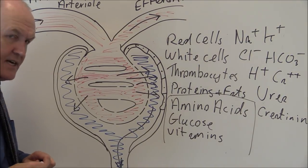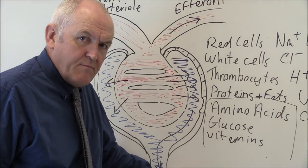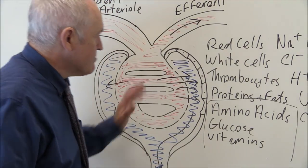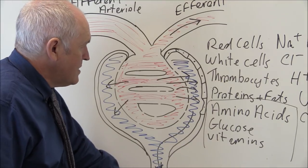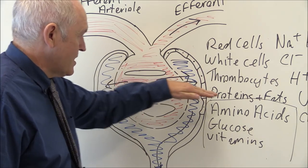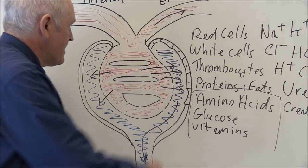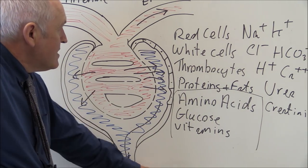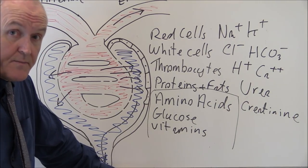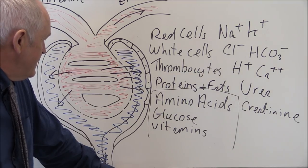So what we see is a physical sieving of the blood based on molecular size: larger molecules are retained in the capillaries, smaller molecules are filtered through. Retained are all the cellular components and the large proteins and fats. Freely filtering through are amino acids, glucose, vitamins, sodium, potassium, chloride, bicarbonate, hydrogen, calcium ions, and waste products such as urea and creatinine.